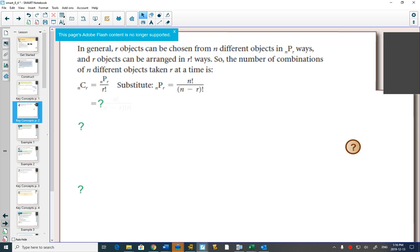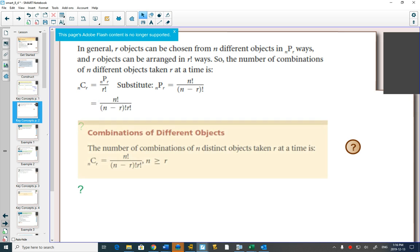So on your next page, they have the formula for combinations. This formula is on your formula book. And unlike the permutations formula where usually it was just easier to use spaces than to actually use the formula, for combinations, we end up using the formula a lot.